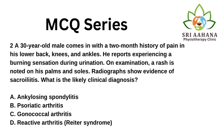A 30-year-old male comes in with a 2-month history of pain in his lower back, knees, and ankles. He reports experiencing a burning sensation during urination. On examination, a rash is noted on his palms and soles. Radiographs show evidence of sacroiliitis. What is likely the clinical diagnosis? A. Ankylosing spondylitis, B. Psoriatic arthritis, C. Gonococcal arthritis, D. Reactive arthritis.